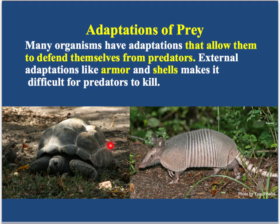Here we have a tortoise and an armadillo. Both of these have what we call external adaptations — they have a really hard exterior. See these bumpy knobs on the tortoise? They're really, really hard. If a wolf or a lion tries to bite through his shell, they would have a really hard time because it's made of very sturdy material. The armadillo has armor and the ability to curl himself into a ball when attacked. So some external adaptations that prey can develop are having really hard shells or armor.